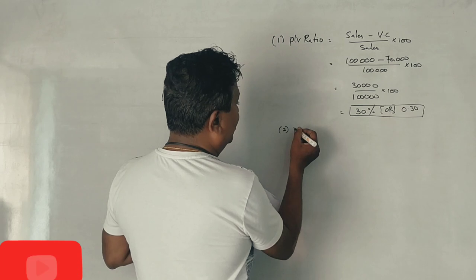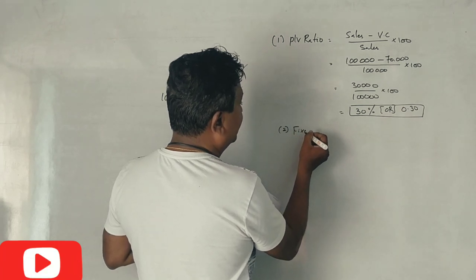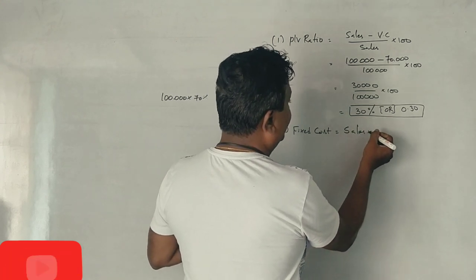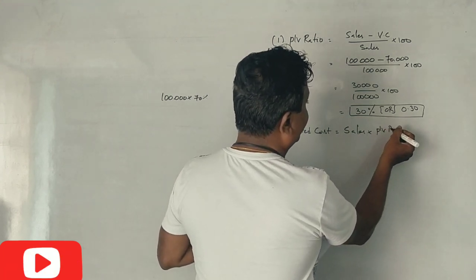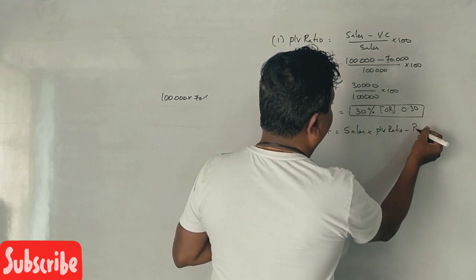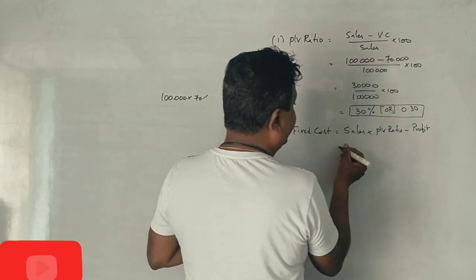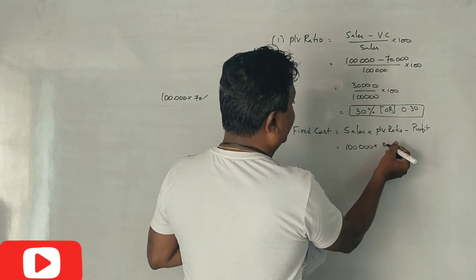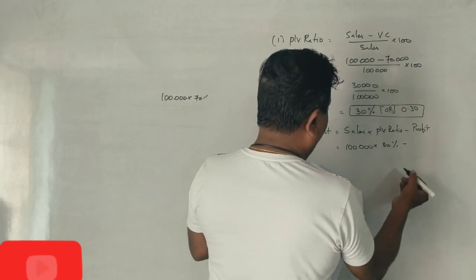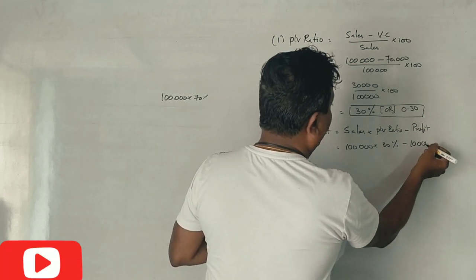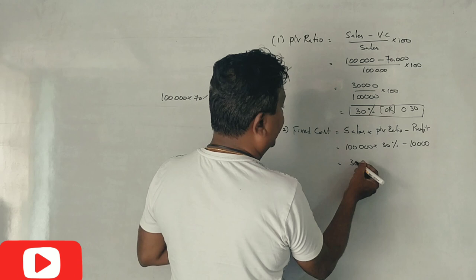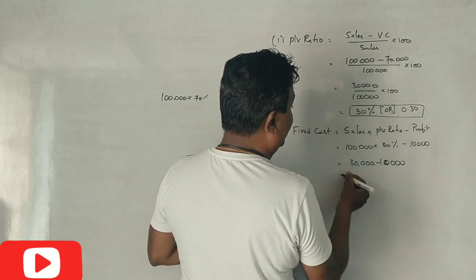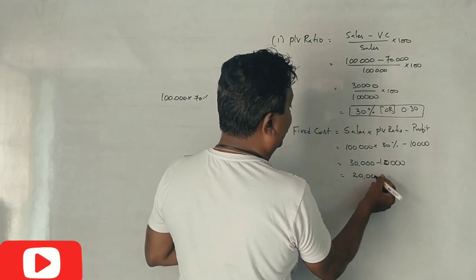Fixed cost is equal to sales into PV ratio, minus profit. Sales is ₹1 lakh, PV ratio is 30 percent, so contribution is ₹30,000. Profit is ₹10,000. Therefore fixed cost equals 30,000 minus 10,000, which is ₹20,000.